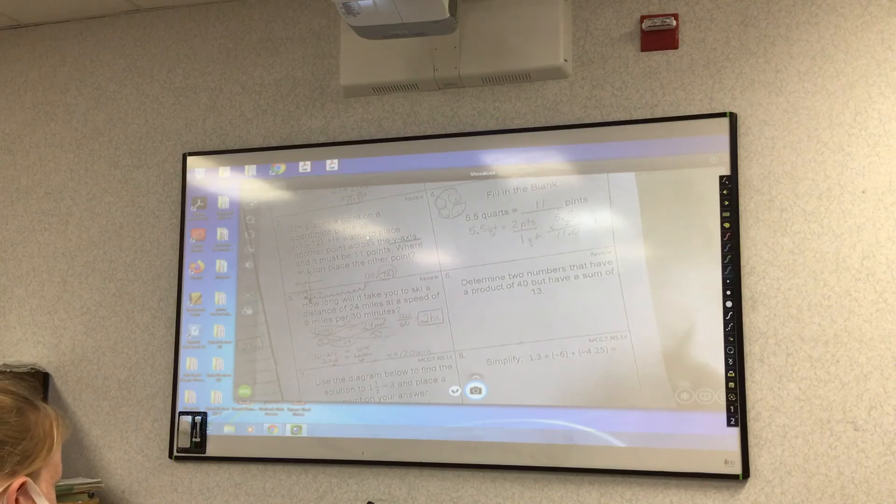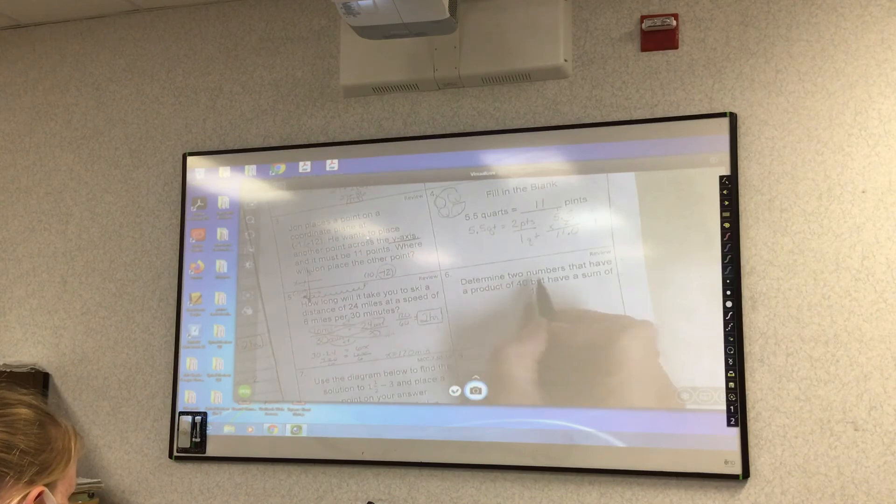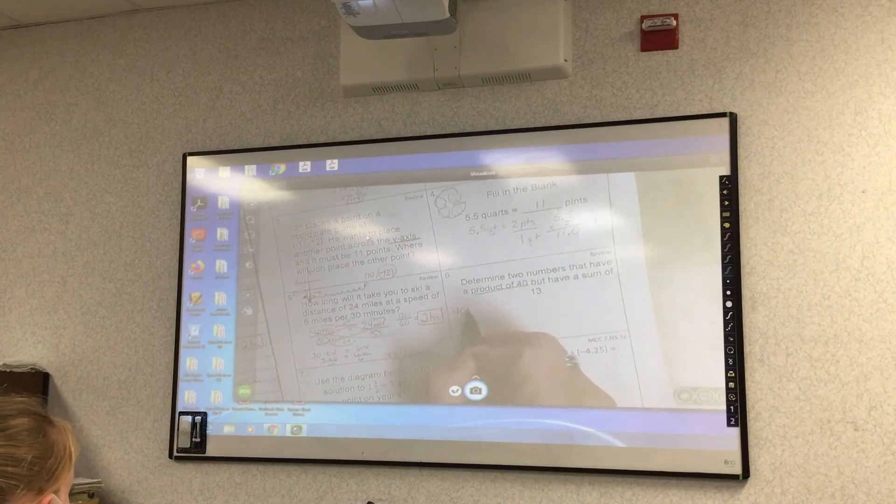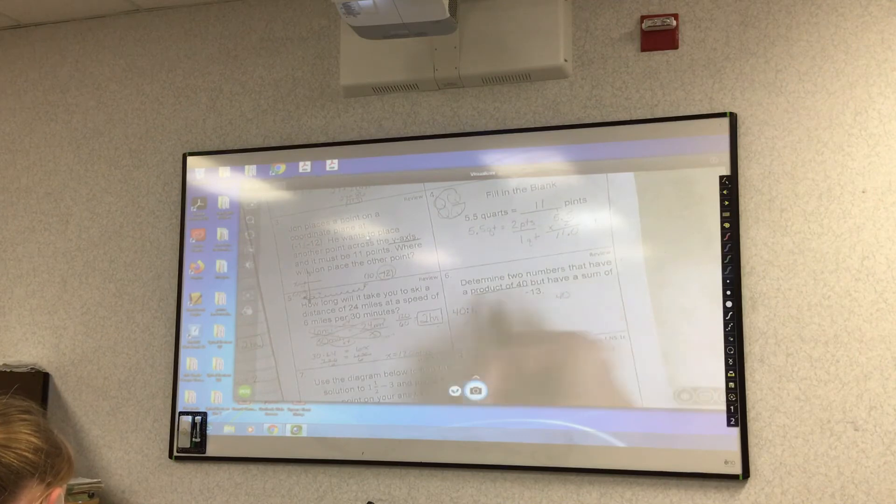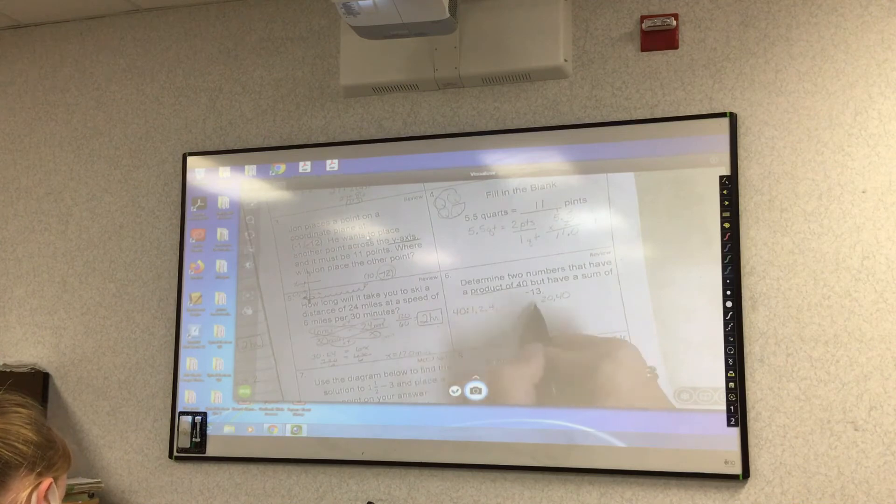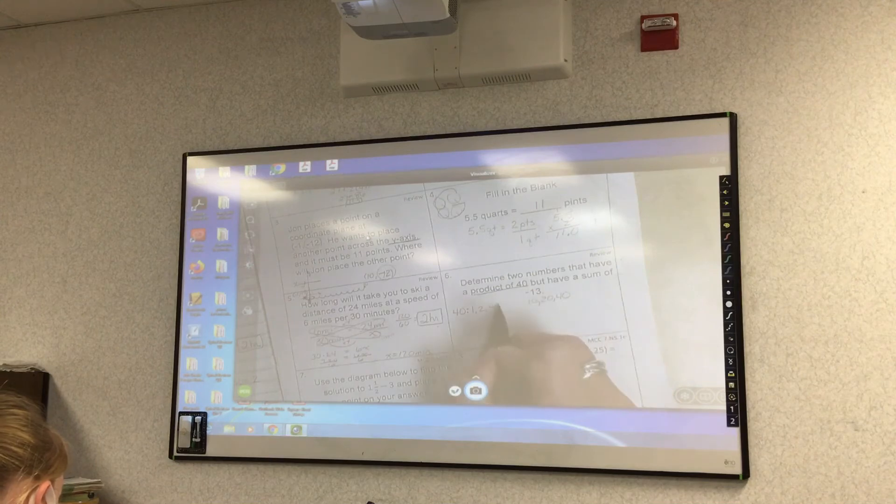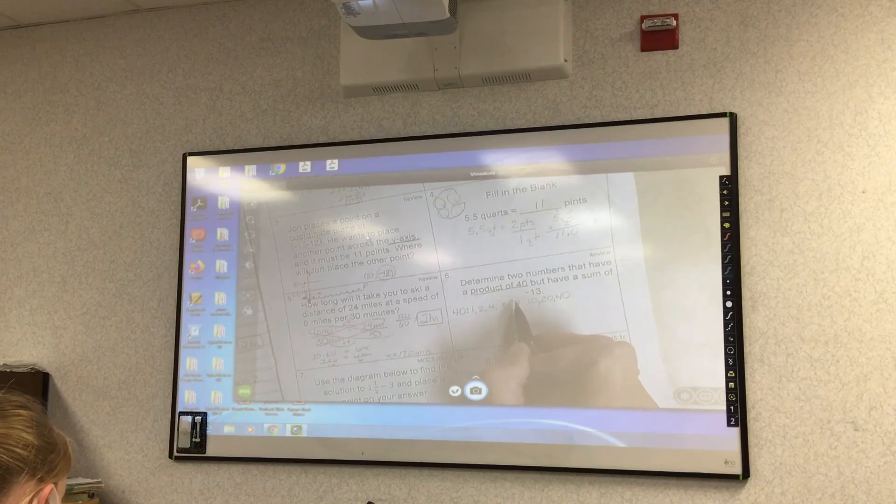Determine two numbers that have a product of 40, but have a sum of 13. So if I'm trying to find the products, I'm going to find the factors of 40. So I have 1 and 40. Well, they don't add, because the sum is adding to 13. 2 and 20, they don't add to 13. 4 and 10, they don't add to 13. 5 and 8. There's 5 plus 8, 13. So your factors are 5 and 8.